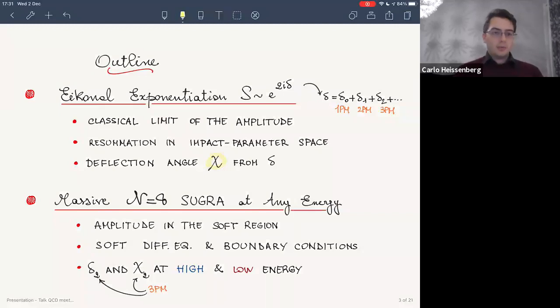In the second half, I will present some results that concern mainly N=8 supergravity. We will consider the scattering of massive states in the maximally supersymmetric theory at generic energies. In particular, we will discuss the full Eikonal exponentiation in the so-called soft region. At the technical level, we will touch upon a technique that has already been mentioned in the past few days: differential equations and their boundary conditions in particular. Then we will discuss some physical properties of the Eikonal and the scattering angle, both at high and at low energies.